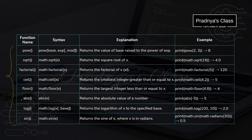Here is a list of some of the functions. The power function is used to calculate the power of a number — we provide the base and the exponent. There is a function to calculate the square root of a number, and even a function to calculate factorial. There are also functions for rounding — ceil and floor — as well as an absolute function, logarithm functions, and trigonometric functions.